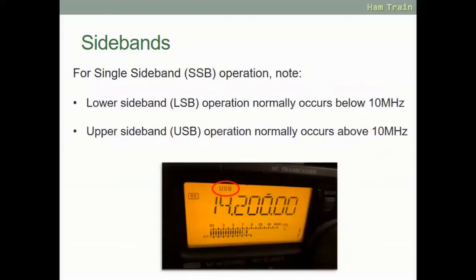There are a few exceptions — for instance, on the 5 MHz band which is shared with the military, we tend to use upper sideband although it is below 10 MHz. This isn't something you need to overly worry about because the 5 MHz band is only available to full license holders — not foundation or intermediate licensees, unless operating through a club station with a club call sign and a full license holder present. It's just an example to show it's more of a courtesy rule.